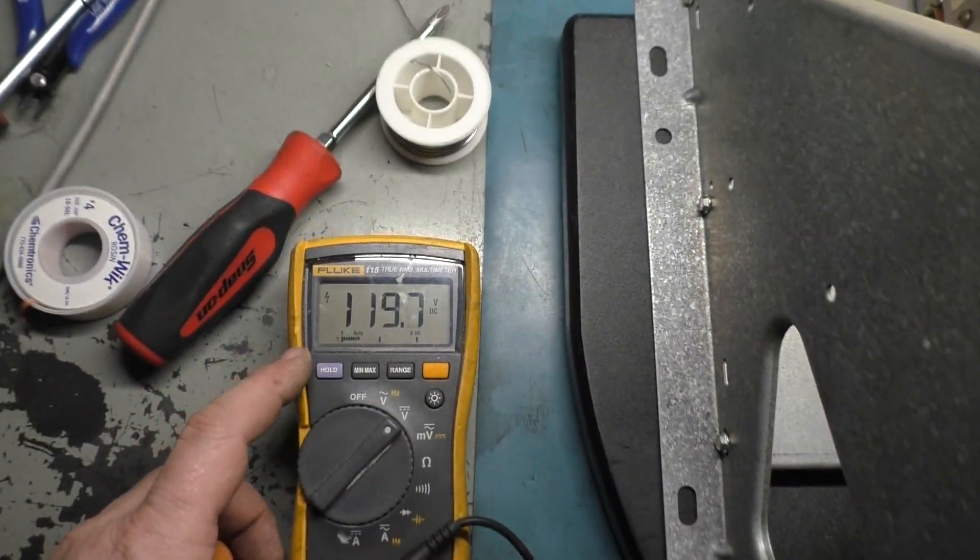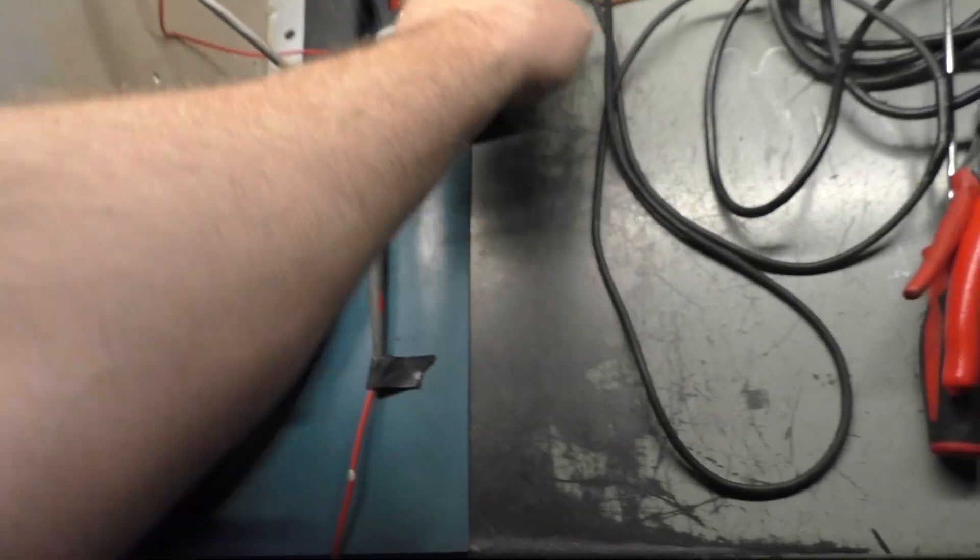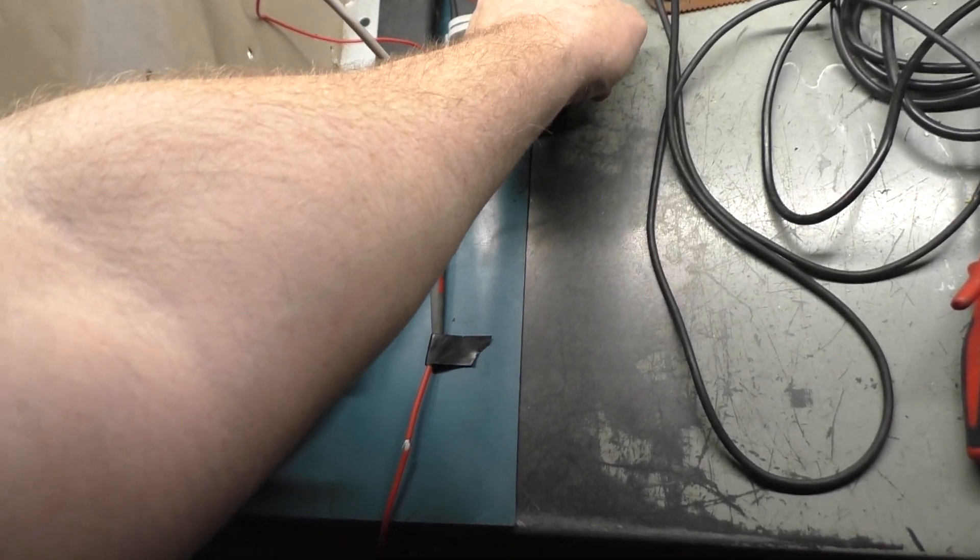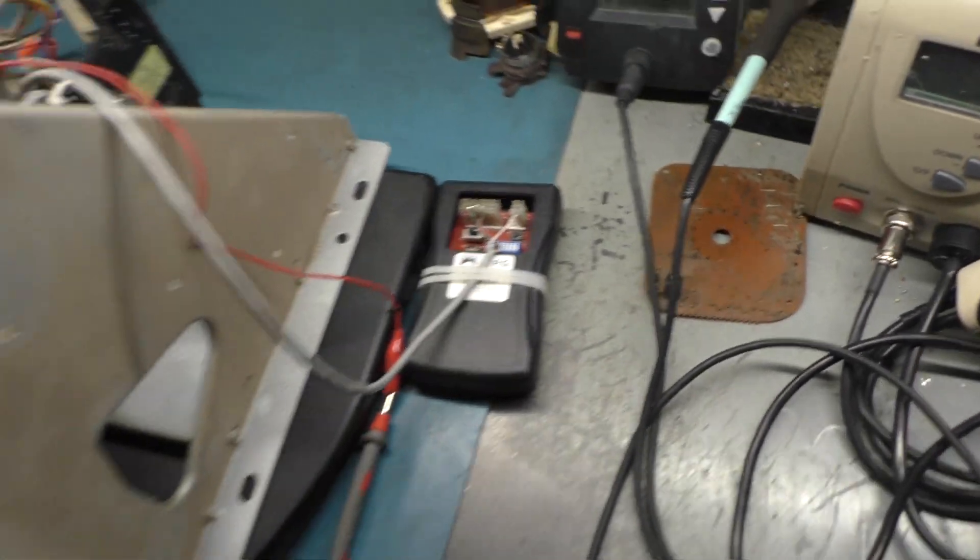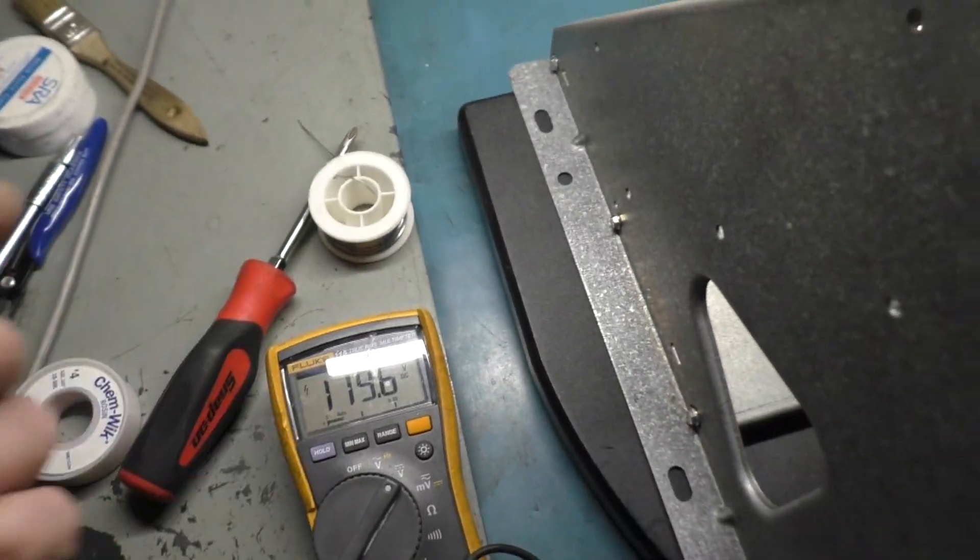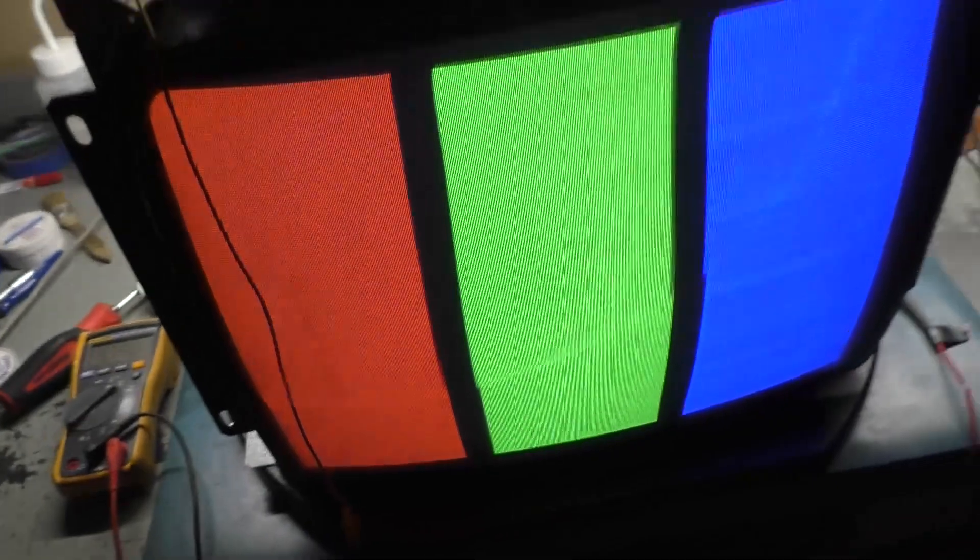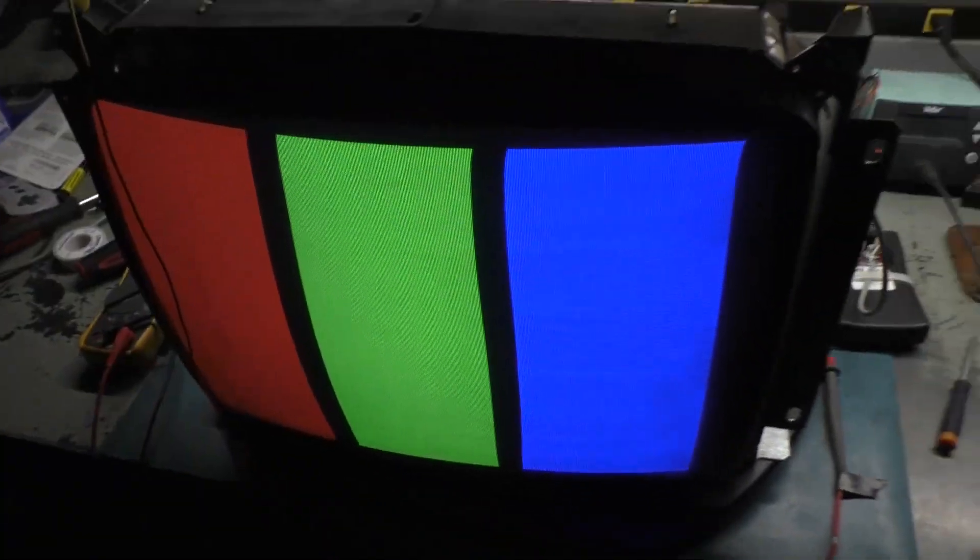119.7. Again, if we probably go to RGB, it'll... Oh, I got my inversion colors on. I was working on a different project, which I'll show you later. But we do have some screen burn from Centipede here. Not too bad, but it is present. 119.6. It's close enough to 120. We'll leave it right where it's at, but boom, there we go. Only thing wrong with this was B plus pot needed wiped and adjusted and brought it right back to life.